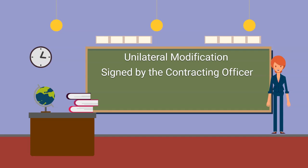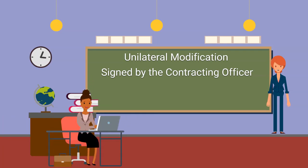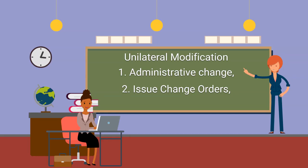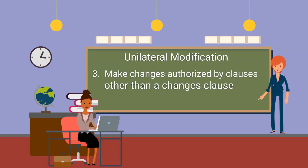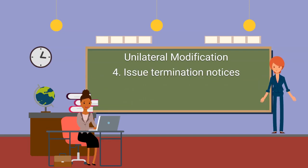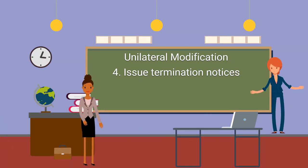Unilateral modifications are signed by the contracting officer. They are used to make administrative changes, issue change orders, and make changes authorized by other clauses than a change clause, such as an options clause or property clause. Unilateral modifications are also used to issue termination notices.